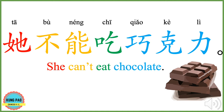她不能吃巧克力。 她 means she. 不能 means can't. 吃 means eat. 巧克力 means chocolate. 她不能吃巧克力 means she cannot eat chocolate. This implies she might be allergic to chocolate.